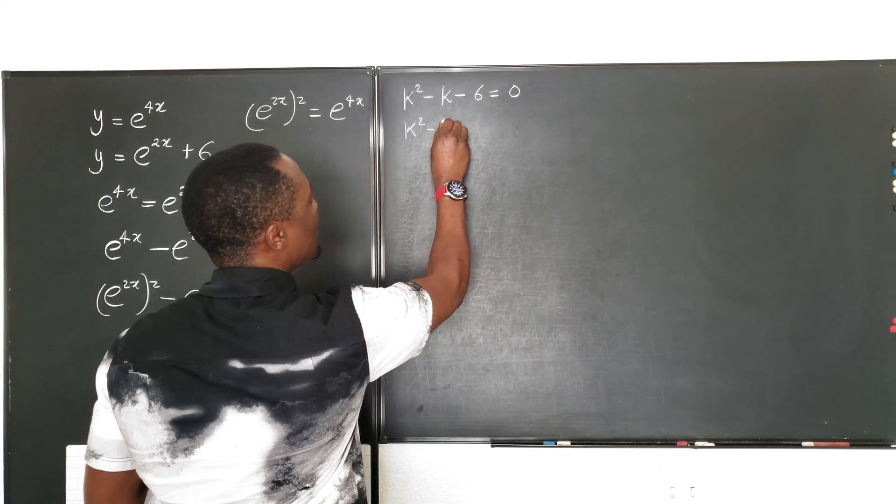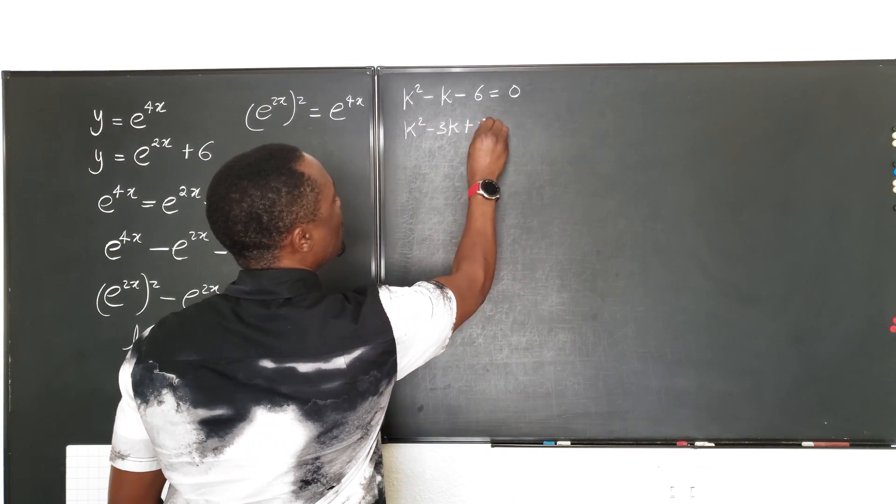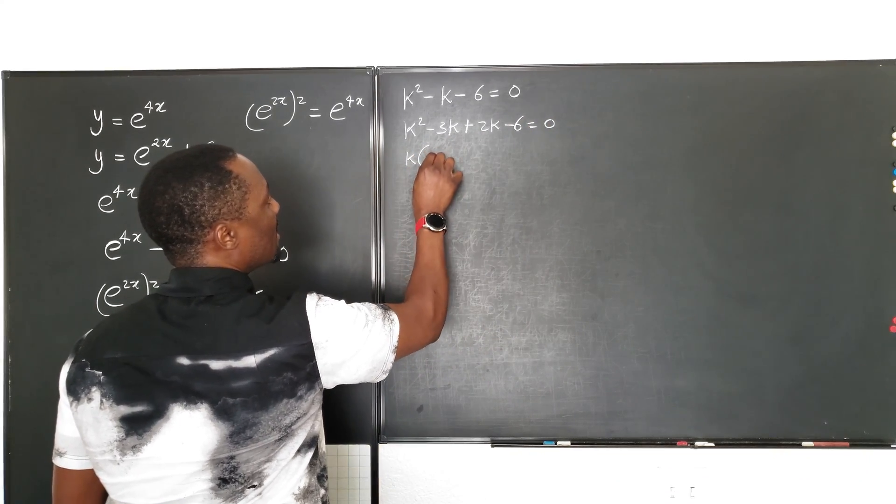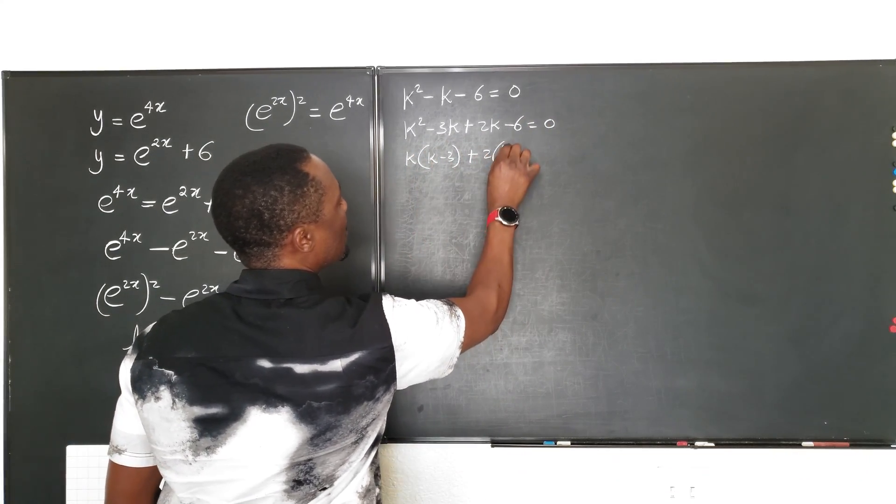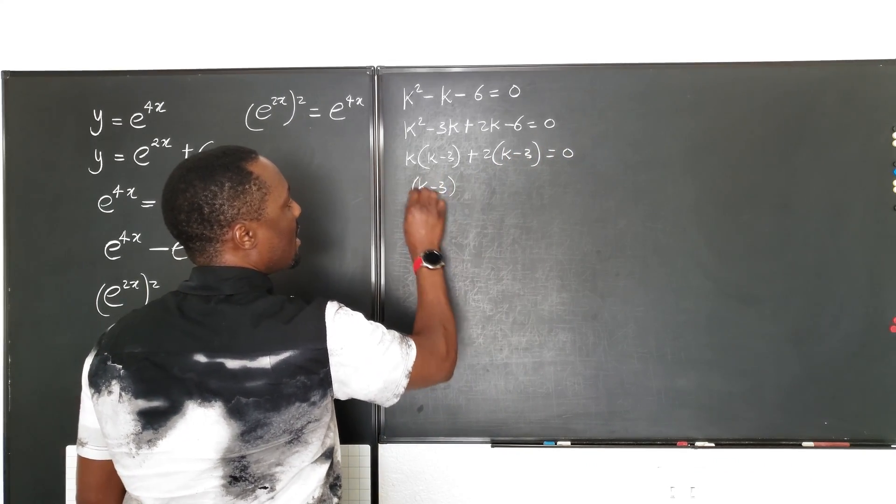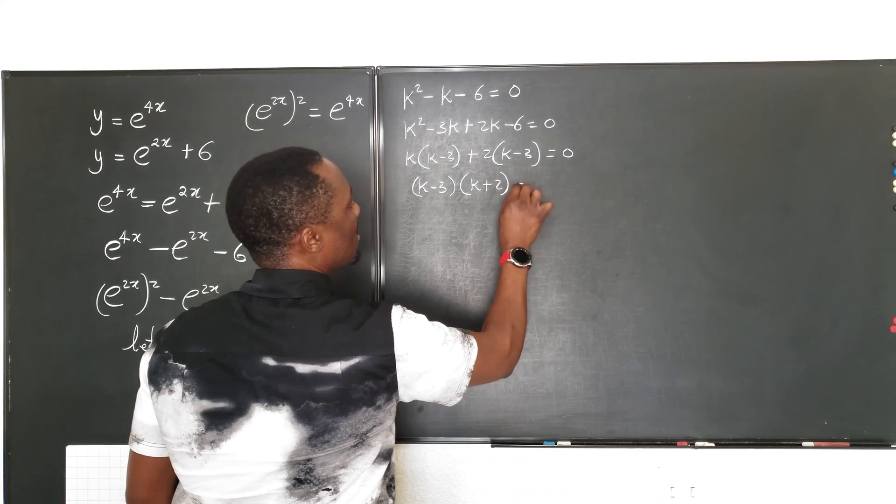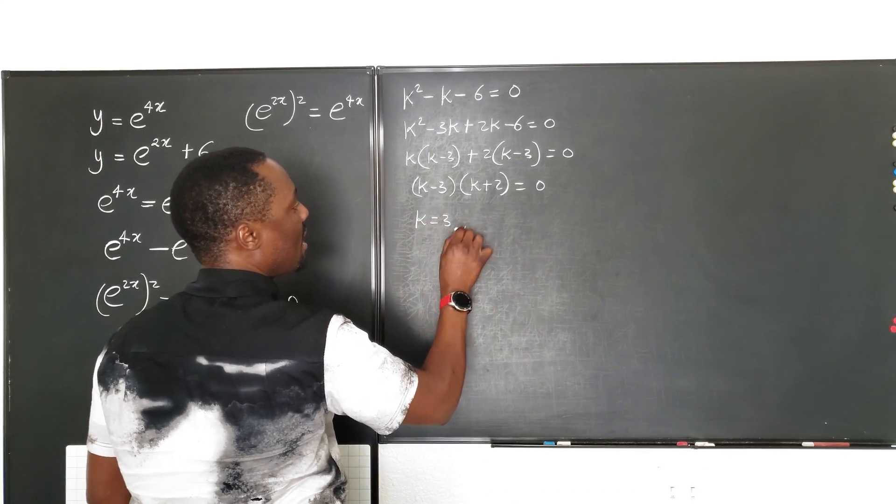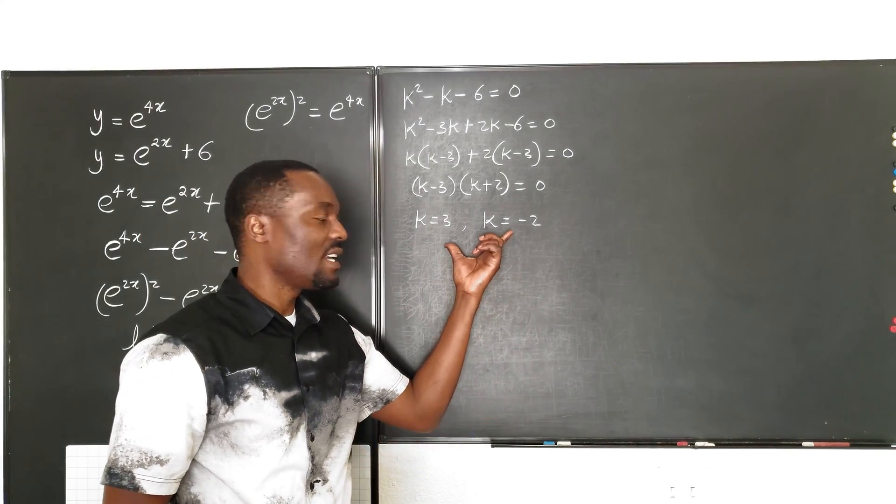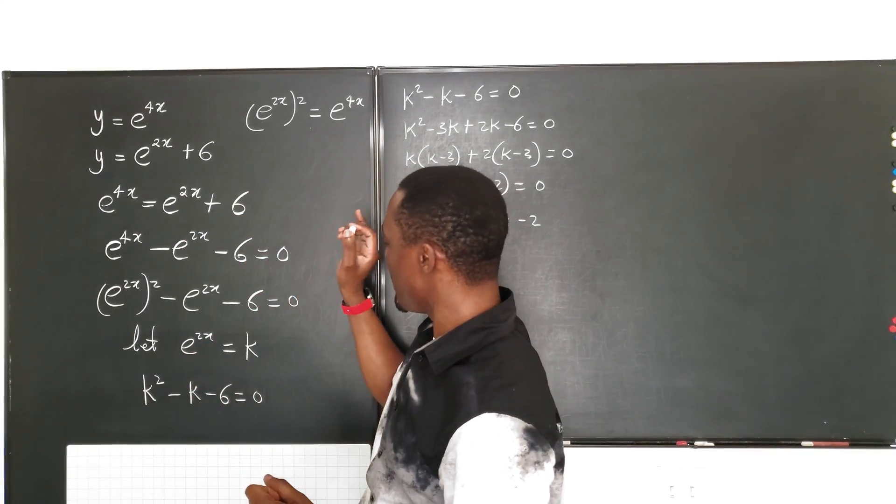So we have k squared minus 3k plus 2k minus 6 equals zero. When you factor, you're going to end up with k into k minus 3 plus 2 into k minus 3 equals zero. So you have k minus 3 and k plus 2 equals zero. So k equals 3 or k equals negative 2. These are the two possible answers.